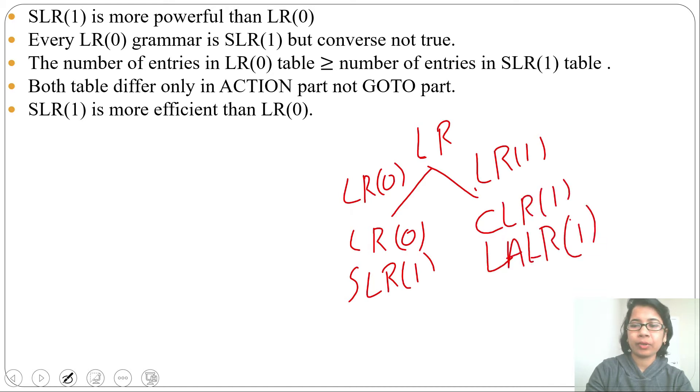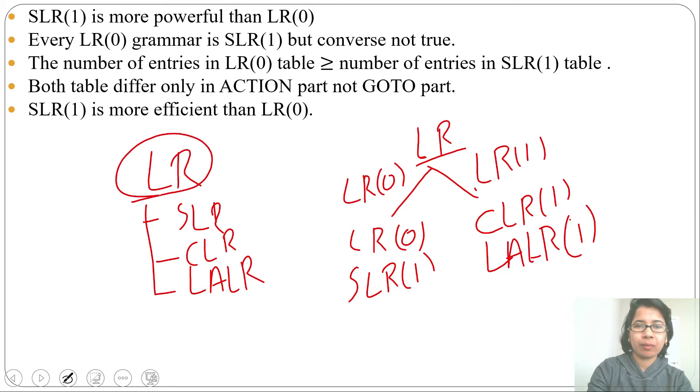In some books you'll see LR is of three types: one is SLR, one is CLR, and another is LALR. LR, that is a common type, means LR0 is considered as a common type. Then SLR, CLR, LALR are types of LR.